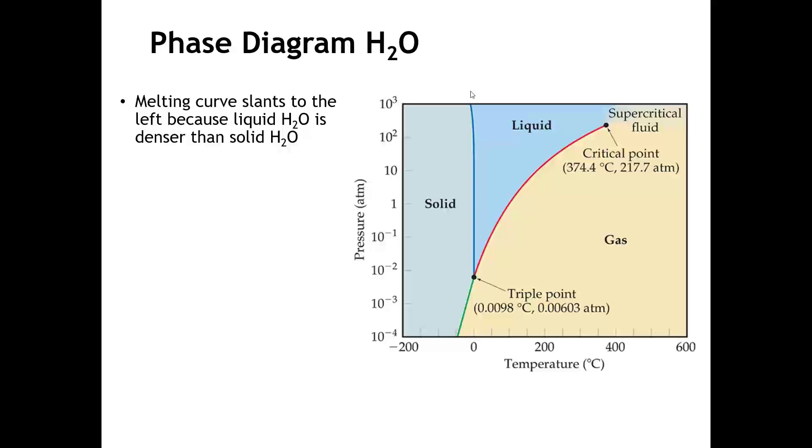So what's going on here? The vertical axis here is pressure. So as you increase the pressure, going vertically, the slope of the melting curve depends on the relative density of the liquid and the solid. And so high pressure is going to favor the denser phase. Normally, that would favor the solid. But remember for water, that solid water is less dense than liquid water. And consequently, that's why this line slopes a little bit to the left.